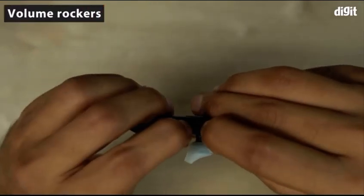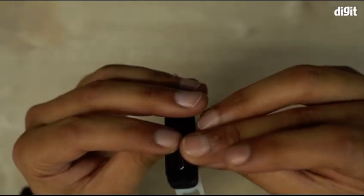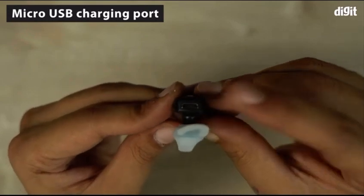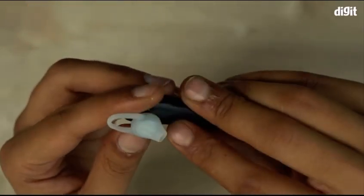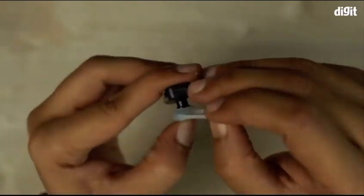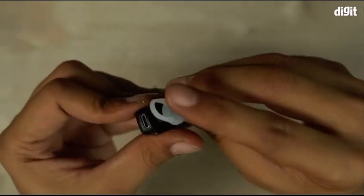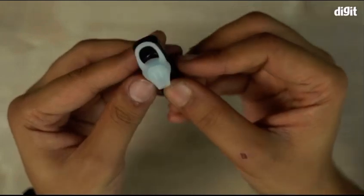There are volume rocker buttons over here on this side and a micro USB charging port right over here. This is the piece that goes inside the ear. It comes with this hook basically. This is what secures the fit inside your ear.